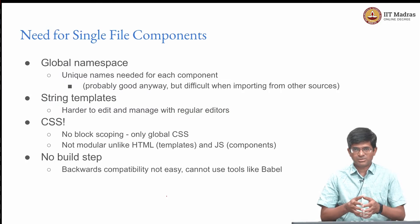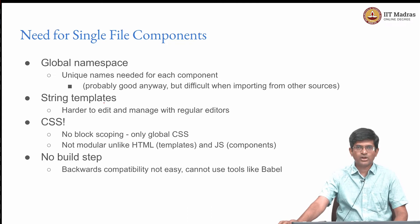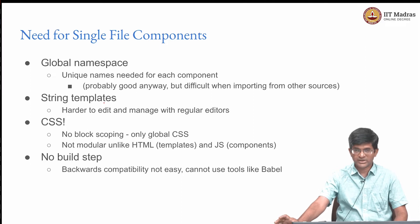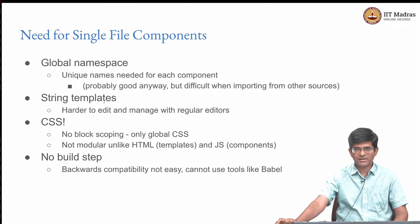But there are some problems that come up. In particular, when creating components, I need to add them in as Vue.components and they go into something called the global namespace, which means I need to have unique names for each component. This can be problematic when trying to import components from libraries written by other people, because I might have named a component something and find later that somebody else named it the same, making it difficult to use their libraries. Or even worse, I need to use two different libraries where the components internally have been named the same.